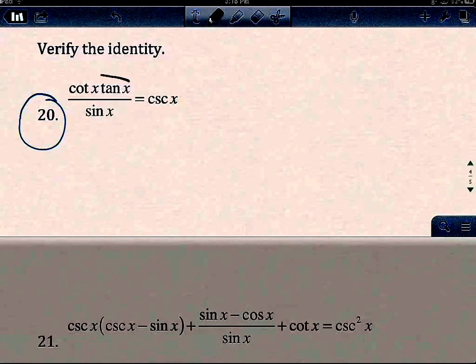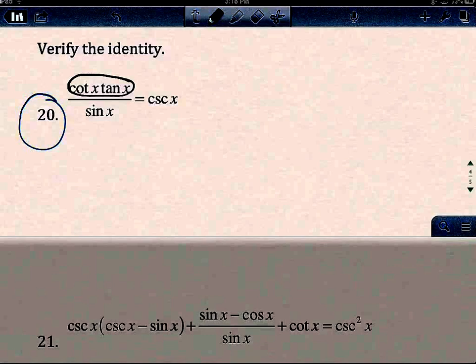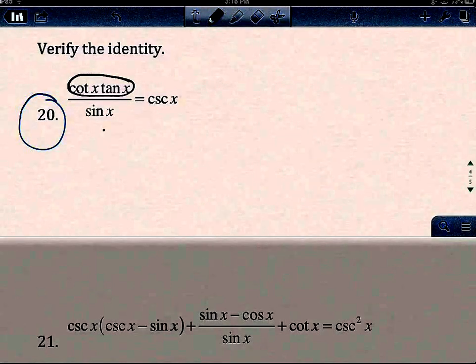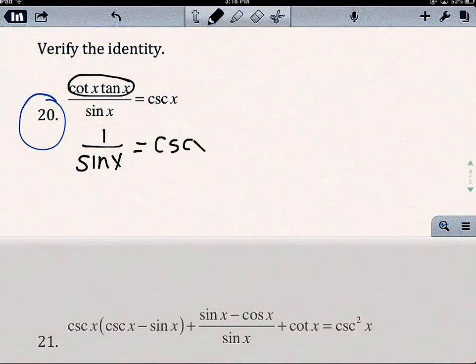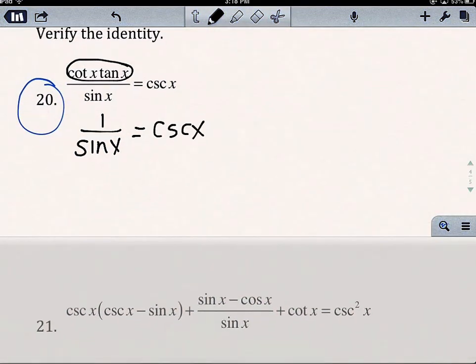I know that they are reciprocals. So, when I multiply them together, they equal 1. Remember, my goal is to get both sides to be the same. 1/sin is the same as csc. So, I could say csc = csc, and I would be done.